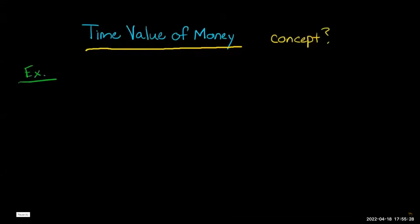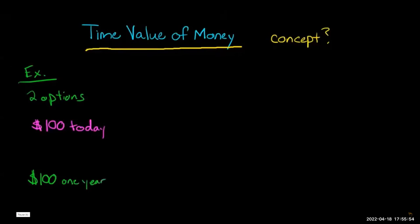Let's look at this through an example. I offer you two options: option one, I give you one hundred dollars cash today; option two, I give you one hundred dollars one year from now. Let's assume that the hundred dollars one year from now is certain — guaranteed. There's no risk associated with it either way. So which would you prefer?